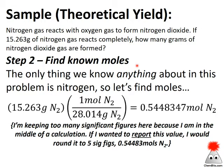Step two: find known moles. The only numerical information we have in this problem is the grams of nitrogen, so that must be what we need to find moles of. I've got 15.263 grams of nitrogen and the molar mass of N₂ calculated from the periodic table, and that gives me my moles of N₂. Note that I've got more sig figs than needed, but when in the middle of a problem, always carry extra sig figs and round at the end. Also, always keep track of units and cancel them appropriately.